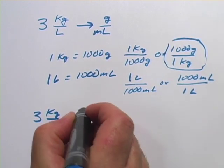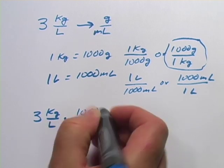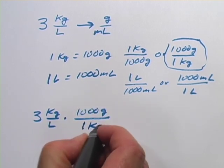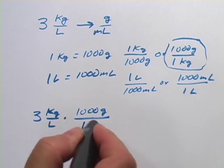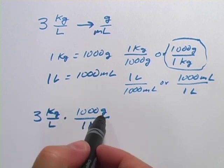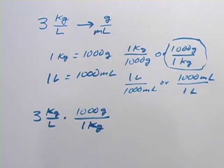So I'm going to multiply this by 1000 grams over 1 kilogram. And yes, the kilograms are going to cancel out here. Now I've got grams on the top, which is what I want for my answer. So I'm halfway there.